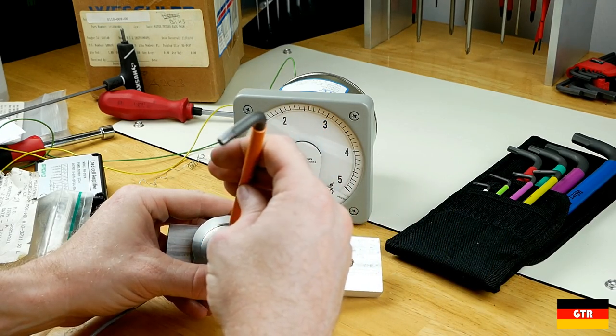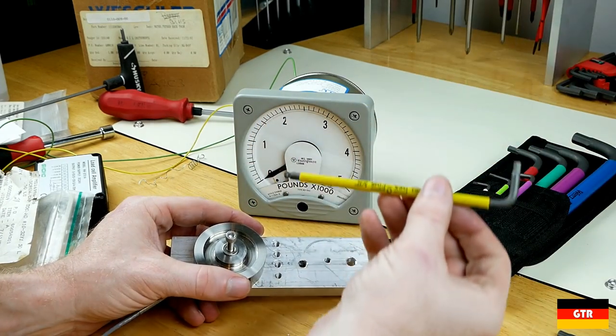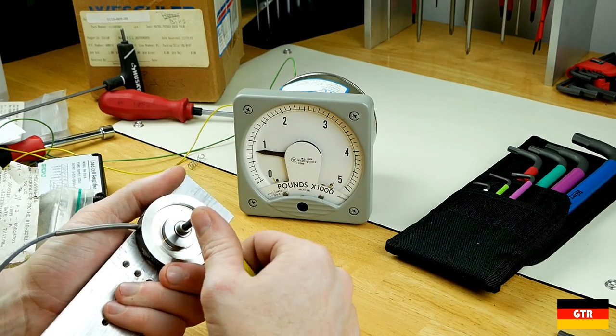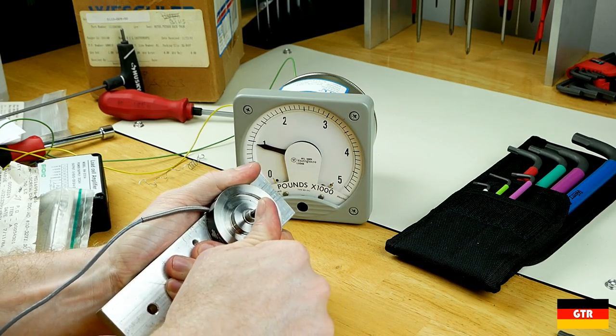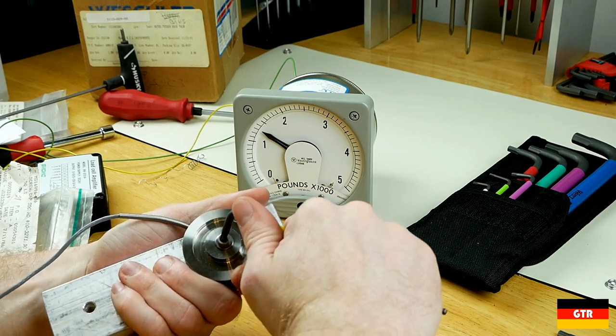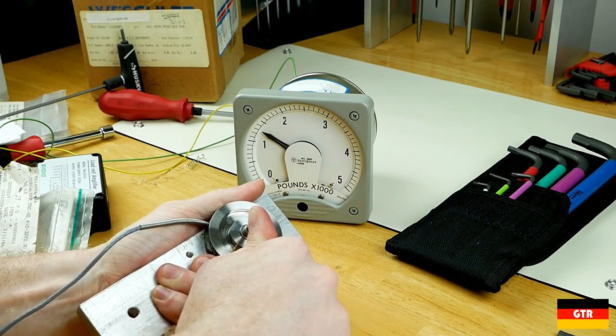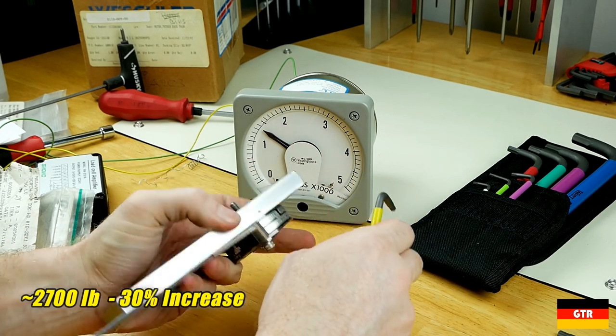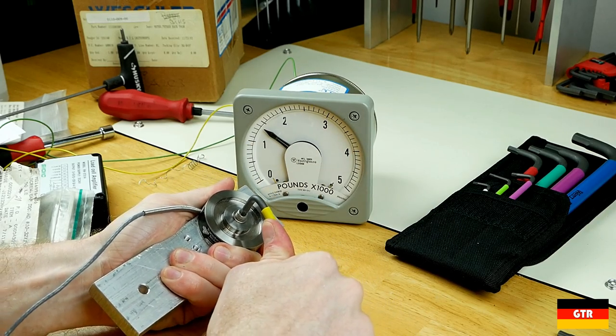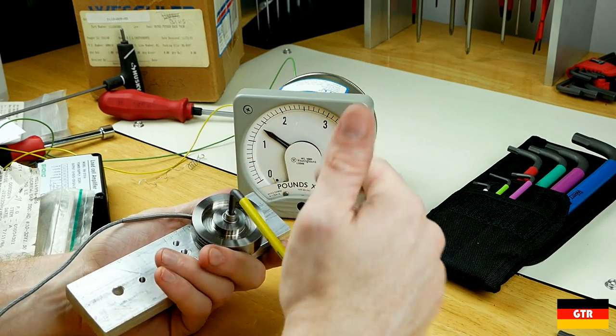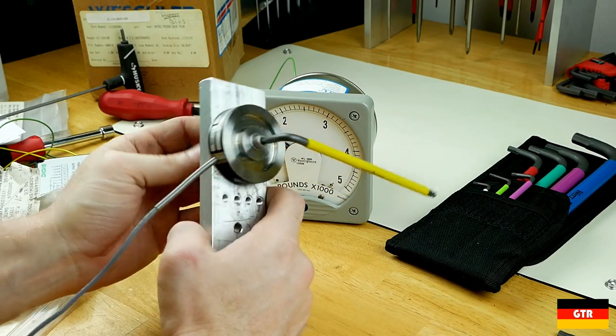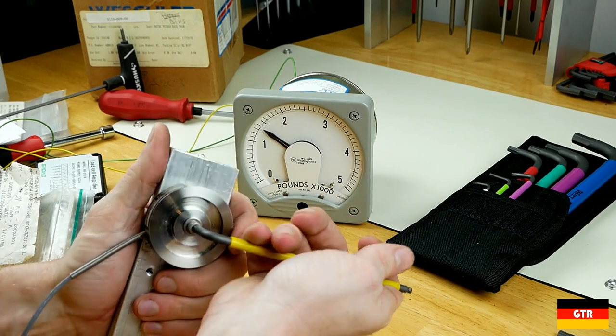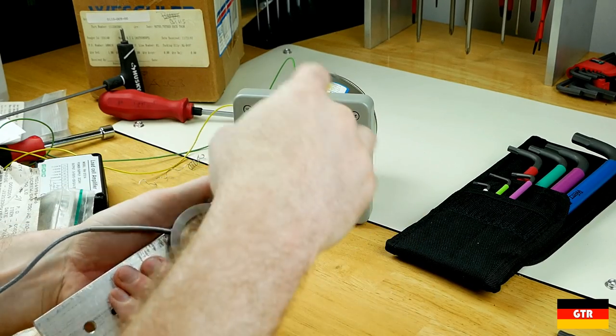We'll do the same thing with the hex plus. So this, since this is an 8-32, this is a 5/32 L key. See if we can get more tension out of the bolt using the hex plus system. Still going. All right, so we're stretching the threads now because it's not getting any higher. I'm turning it, but it's not raising the tension any. So that means we're actually stretching the threads out. And the threads are actually absorbing the extra tension I'm giving it. So look at that. No problems getting that loose.